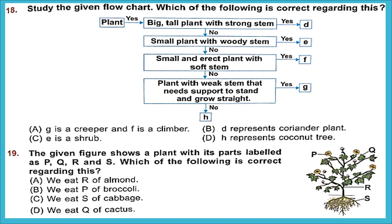Question 18: Study the given flow chart. If a plant is big and tall with a strong stem — yes — it is D, which is a tree. If it is a small plant with a woody stem — yes — it is E. If it is small and erect with a soft stem — yes — it is F. If no, then a plant with a weak stem that needs support to stand — yes — it is G; if no — it is H.